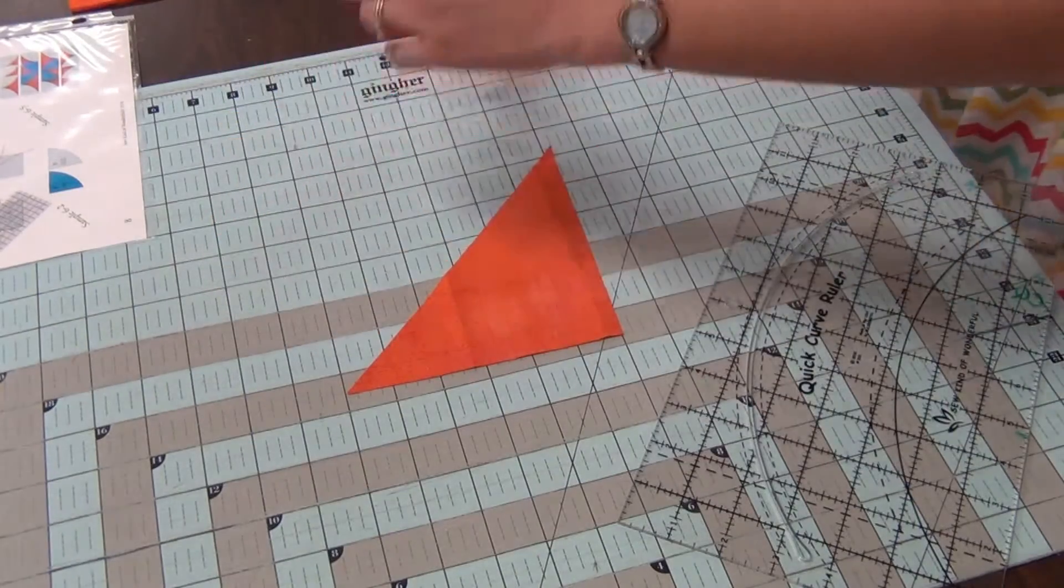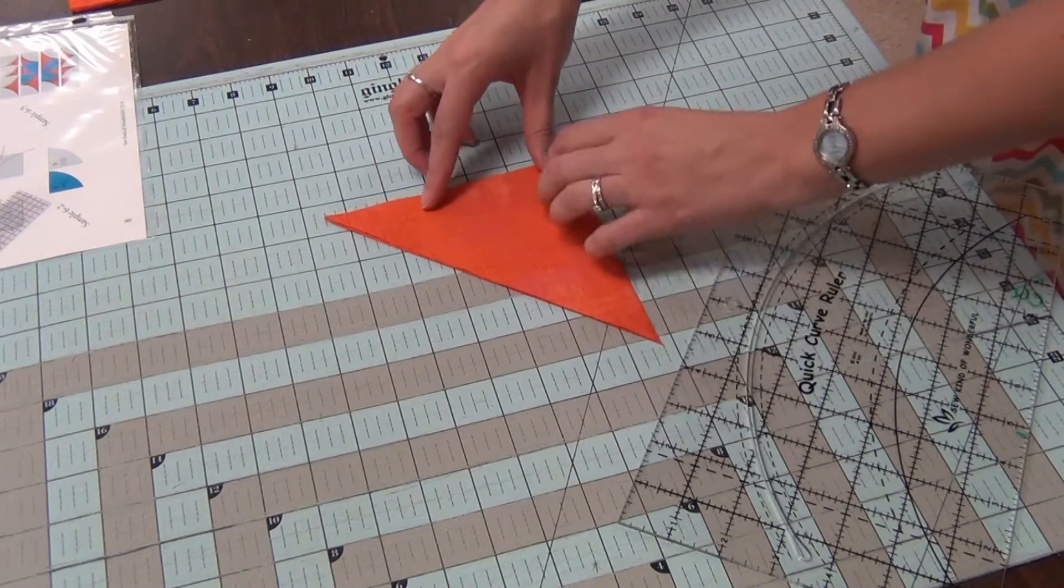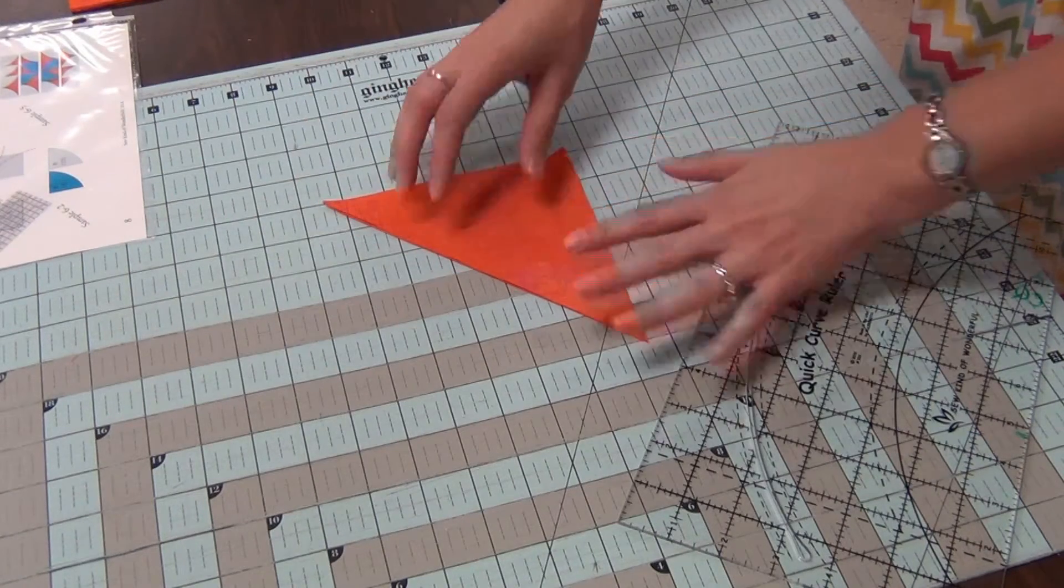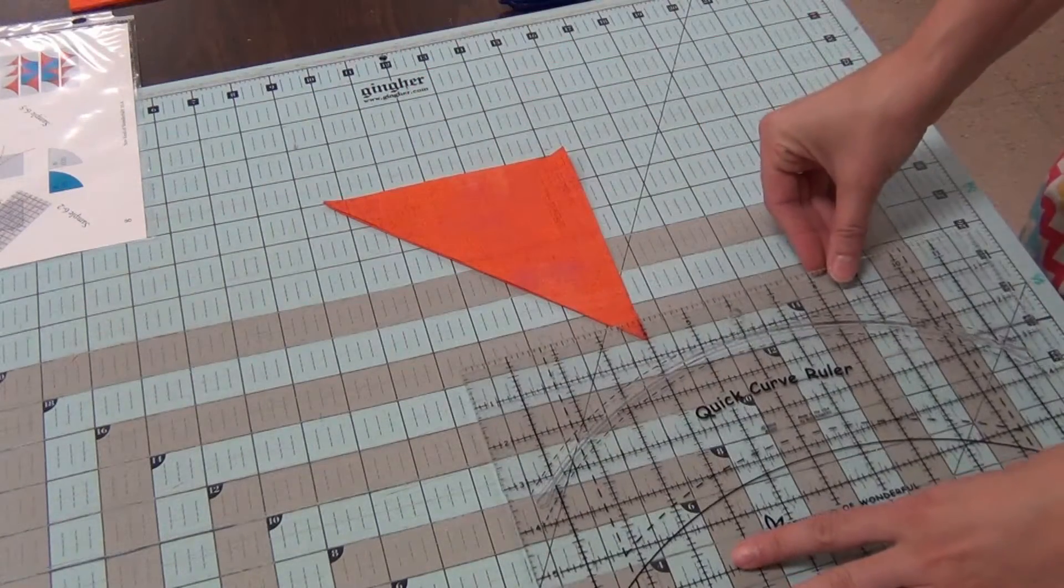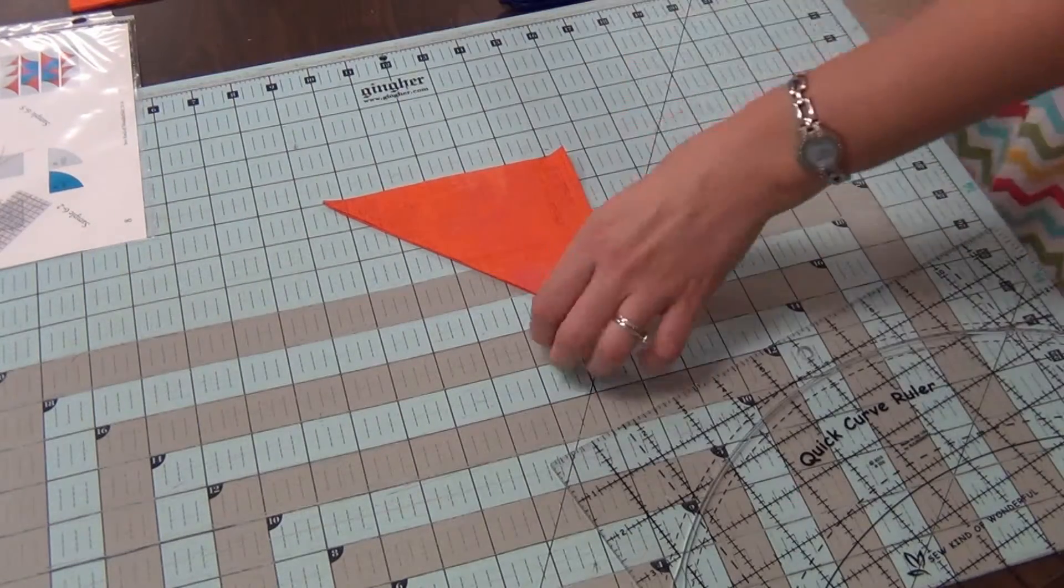And then you're going to be cutting off these points. You're going to cut off a half inch on each. So I just lined up a half inch line on my ruler and cut off those little dog ears.